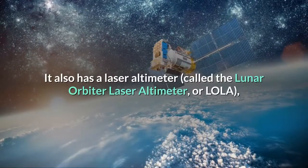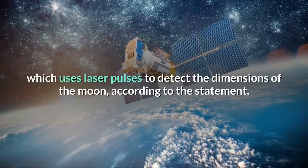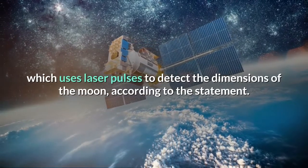It also has a laser altimeter, called the Lunar Orbiter Laser Altimeter, or LOLA, which uses laser pulses to detect the dimensions of the moon, according to the statement.